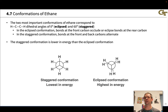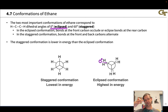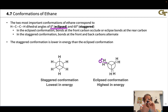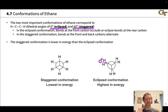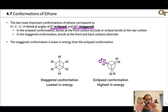Ethane has two conformations that are most important to consider: an energy maximum and an energy minimum. These correspond to the zero-degree dihedral, or eclipsed structure, where the front and back C-H bonds are perfectly aligned, so they're occluding each other. In a three-dimensional model, the C-H bonds are exactly aligned at all three positions, because the geometry is the same at the front and back carbons. That corresponds to a zero-degree dihedral angle.